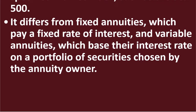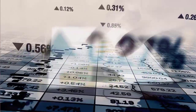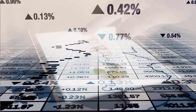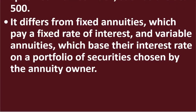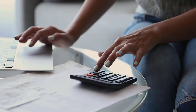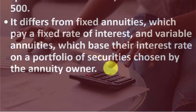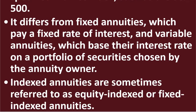Indexed annuities differ from fixed annuities, which pay a fixed rate of interest, and variable annuities, which base their interest rate on a portfolio of securities chosen by the annuity owner. Fixed annuities are the most conservative kind, with everything laid out up front. Variable annuities offer more flexibility in the portfolio tied to the annuity. Indexed annuities instead use something like the S&P 500 as a generic measure of market performance. Indexed annuities are sometimes referred to as equity-indexed or fixed-indexed annuities.